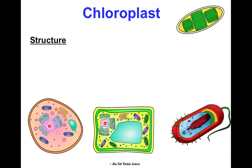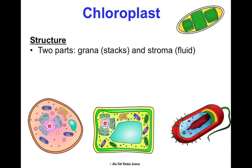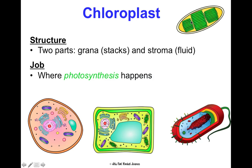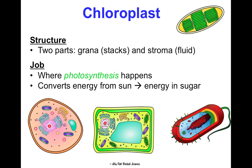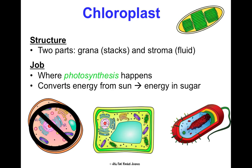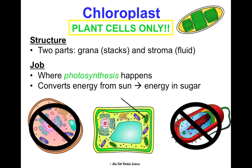The chloroplast also has two parts: grana, which are the stacked structures you'll see, and stroma, which is the fluid part. Its job is where photosynthesis happens — it converts energy from the sun into energy stored in sugars. Chloroplasts are not in animal cells, but there are multiple in plant cells. They're also not in bacteria cells, so this is a plant-cell-only organelle.